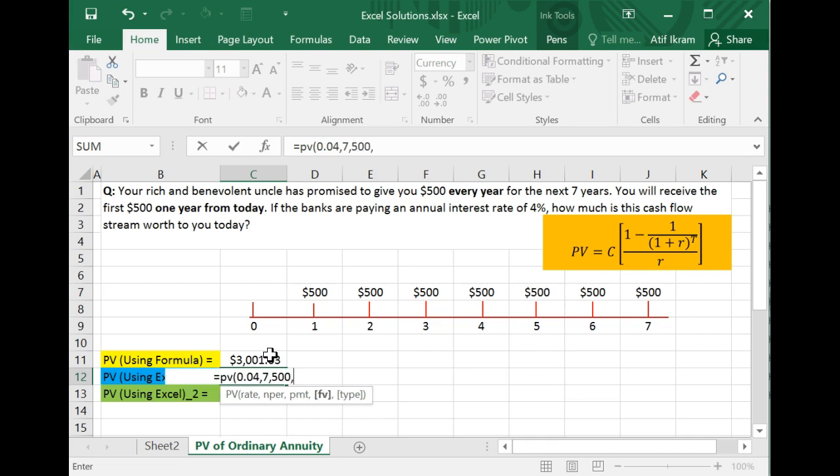There is no future value. Yes, all of these 500s are in the future, you're absolutely right about that. But all of that is being accounted for by you entering $500 as the payment. In a way, you're saying that I'm going to get in the future seven 500s, right? So then you don't need to account for a future value separately. So you can just go past this.